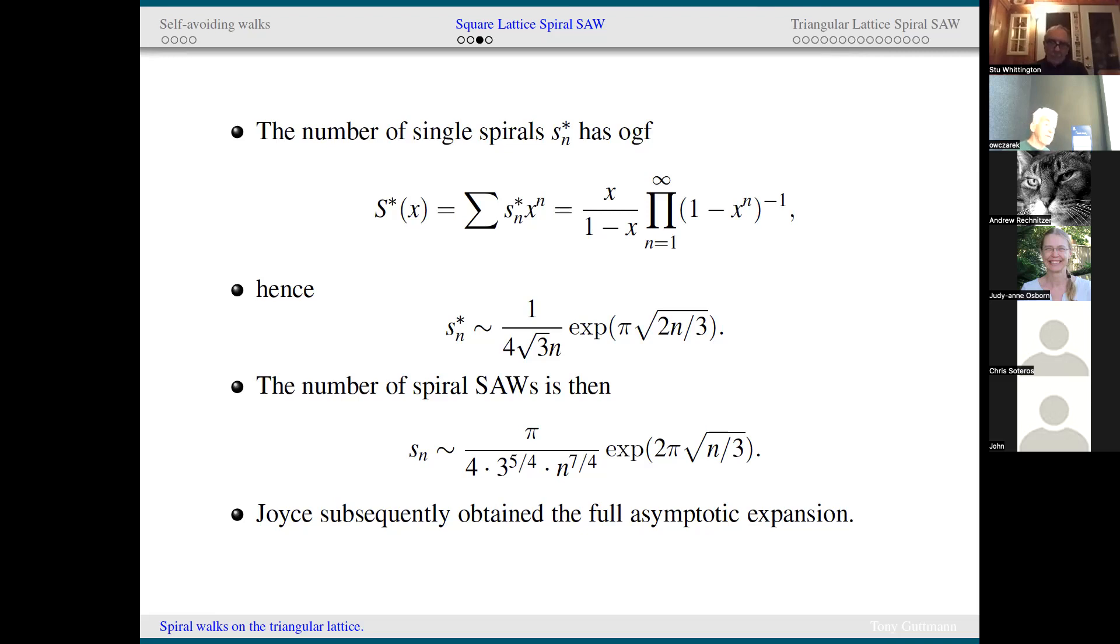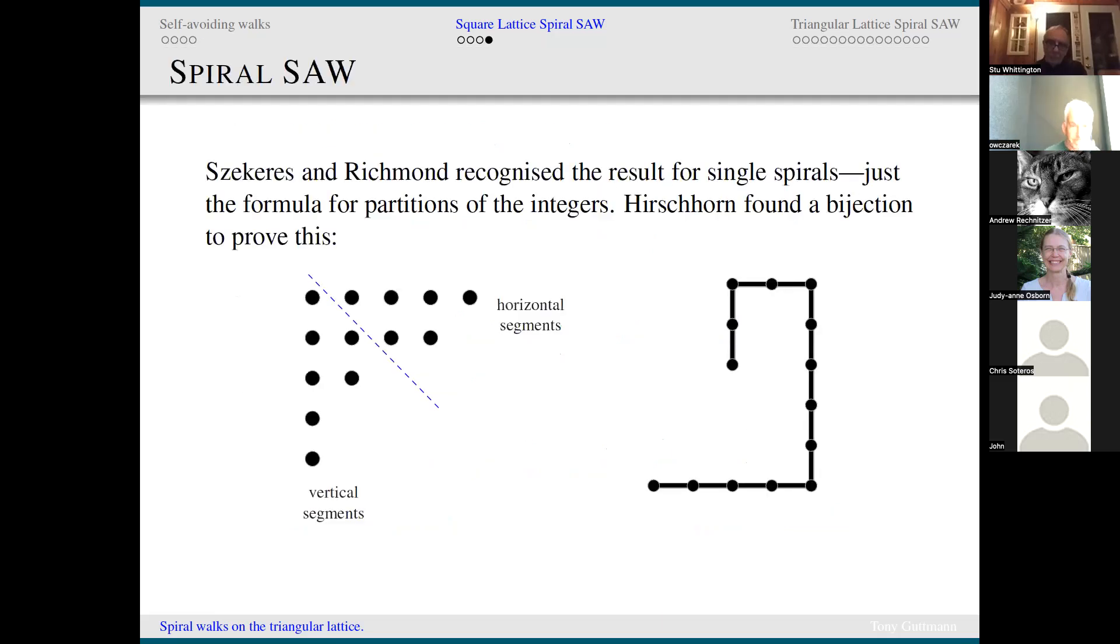It's not too difficult to show that the number of single spirals S_n^* has this generating function expressed as an infinite product x over one minus x times the product of one over one minus x to the n. And hence the asymptotic behavior follows: e to the two pi root n over three with an exponent one over n to the seven fourths and an amplitude as given. Jeff Joyce, who was working with Richard as a PhD student at the time, subsequently obtained the full asymptotic expansion.